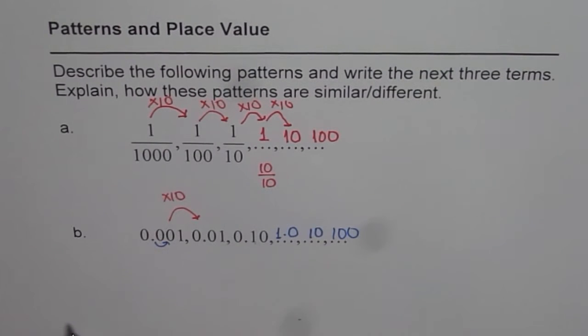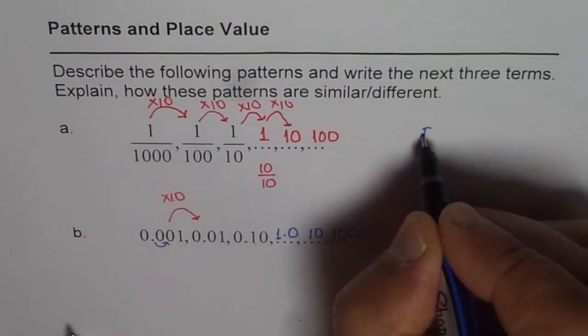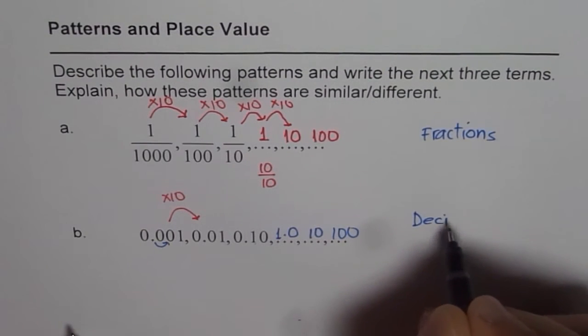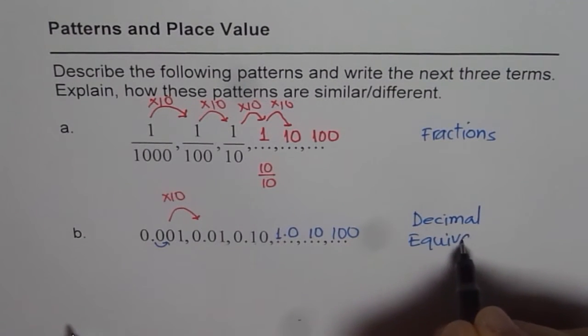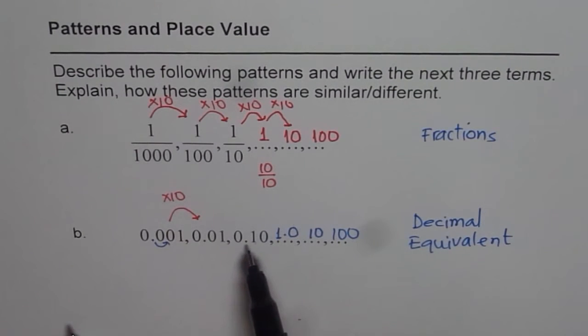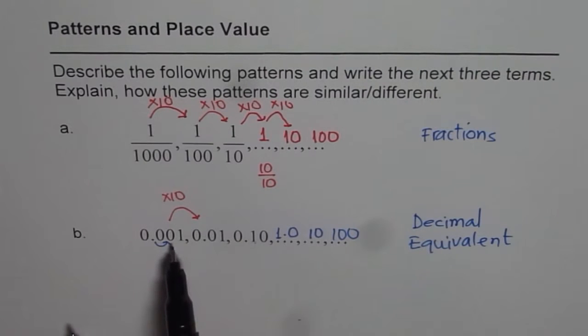So the two patterns are actually very similar. They are exactly similar. The only difference is that we started with fractions. And here we have decimal equivalents. But both are equivalent. So these decimal numbers are equivalent to the fractions we started with. So when I say 1/10, it means 1 out of 10. This is then 1/100 and that is 1/1000. Do you understand?